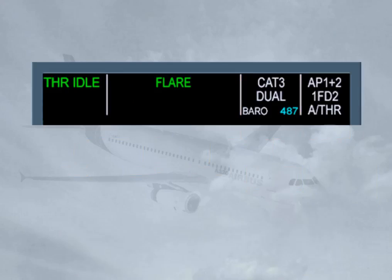In certain cases, the second and third columns are combined to display a single autopilot flight director mode, which is common laterally and vertically. These modes are common modes for approach, which means that they are closely linked together.